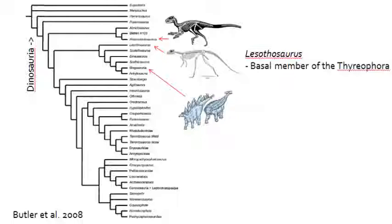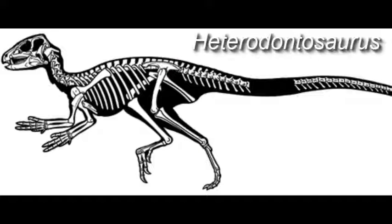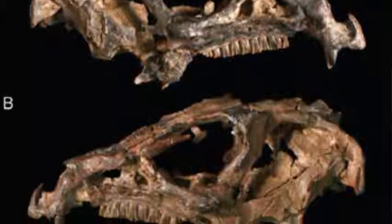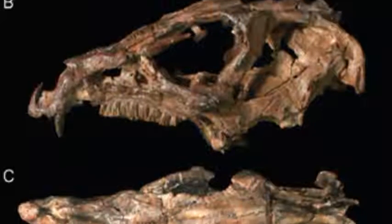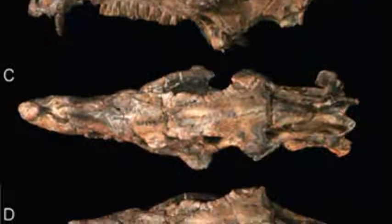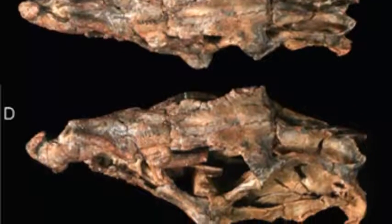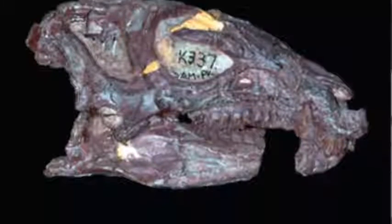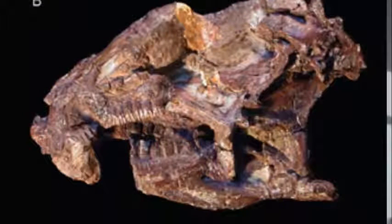Not everyone is on board with the idea of Lesothosaurus as a basal member of the Ornithischian dinosaurs. Richard Butler, a paleontologist in London, has argued that the Heterodontosaurida dinosaurs are basal to all other Ornithischian dinosaurs. Heterodontosaurus is a turkey-sized dinosaur, well known from some incredibly amazing skeletons. It differs from Lesothosaurus in having an indented region along the teeth implying the presence of cheeks, and in having enlarged canine-like teeth between the premaxilla piercing teeth and the worn molar-like teeth in the back of the jaw used for chewing vegetation.